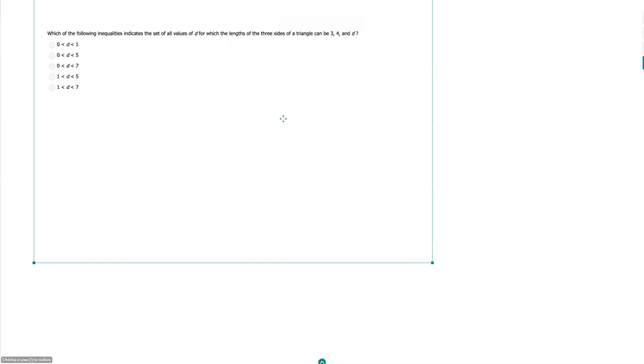Which of the following inequalities indicates the set of all values of D for which the lengths of the three sides of a triangle can be 3, 4, and D?